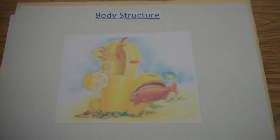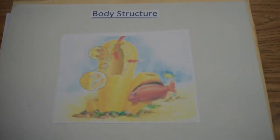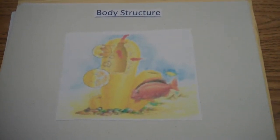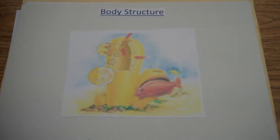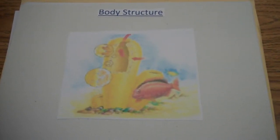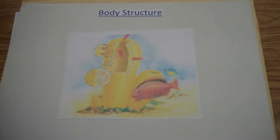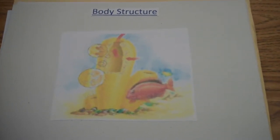Sponges have collar cells, spikes, pores, and jelly-like cells. Collar cells are cells that have little hairs that move water through the sponge. Spikes protect and support the sponge. Pores let water in and out of the sponge. Jelly-like cells distribute and digest food.